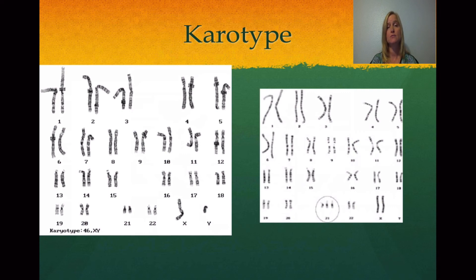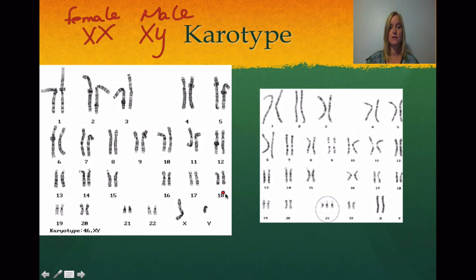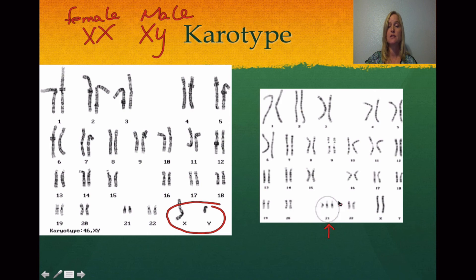Karyotypes are done to see if there are any chromosomal abnormalities. Looking at the karyotype on the left-hand side, you can see 22 chromosomes with matching pairs, and then the 23rd chromosome shows the X and Y — the sex chromosomes — indicating this is a male. Over on the right-hand side, this karyotype shows an abnormality: chromosome 21 has three copies instead of the normal two. There are two X chromosomes, so this is a female. Having three copies of chromosome 21 is what leads to Down syndrome.